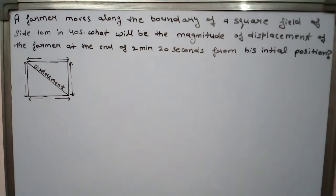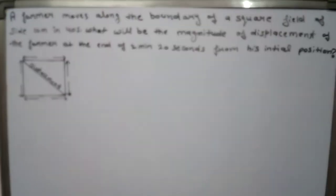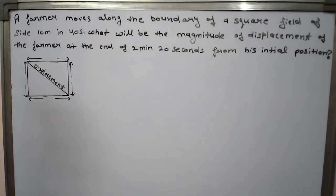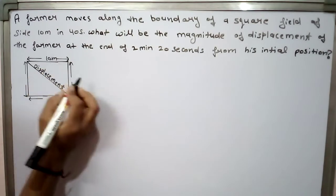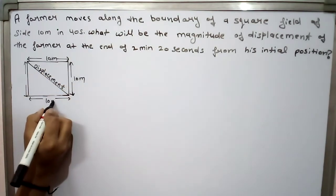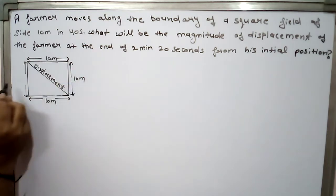A farmer moves along the boundaries of a square field of size 10 meters in 40 seconds. What will be the magnitude of displacement of the farmer at the end of 2 minutes 20 seconds from his initial position? This is a square field of size 10 meters. The square field side is 10 meters. This is 10 meters and this is also 10 meters.